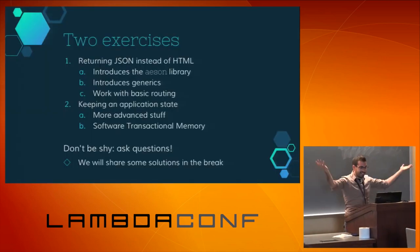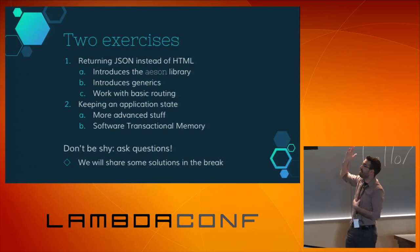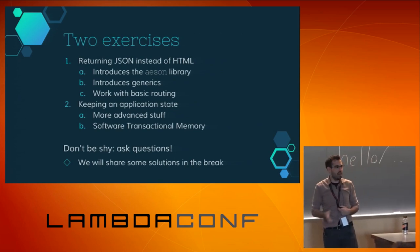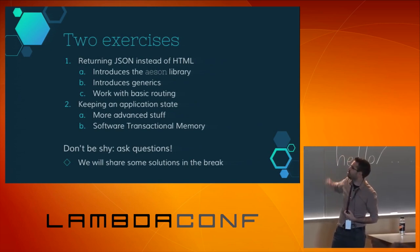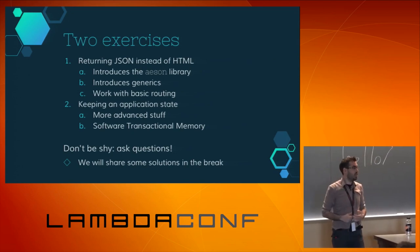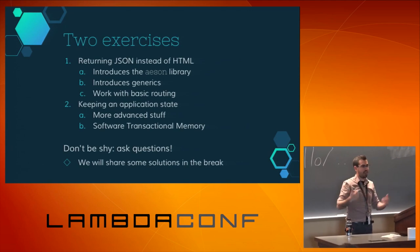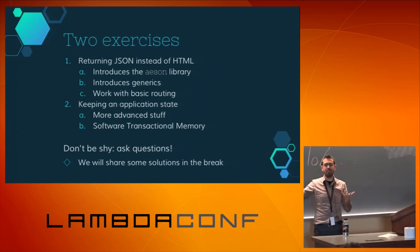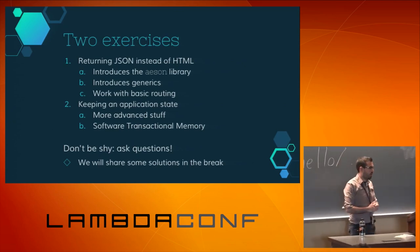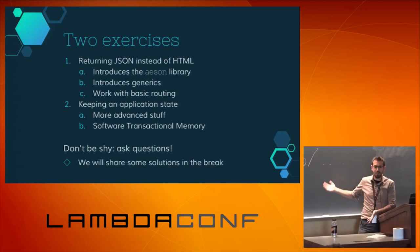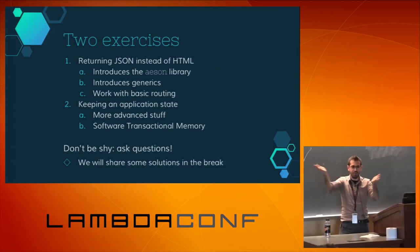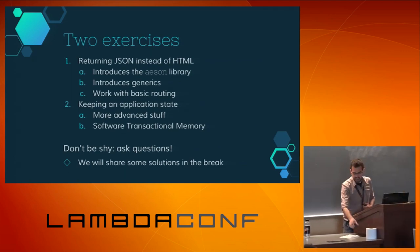So far so good — now it's time for fun. I have two exercises. I recommend if you are a beginner in Haskell, use the first one, which shows how to return JSON instead of HTML — it shouldn't change that much but introduces a very useful library called Aeson. It also has exercises on basic routing. If you are advanced in Haskell, I suggest the second exercise, which is about application state using STM — software transactional memory. Don't be shy with questions. We'll write down the interesting ones and share them after the break.